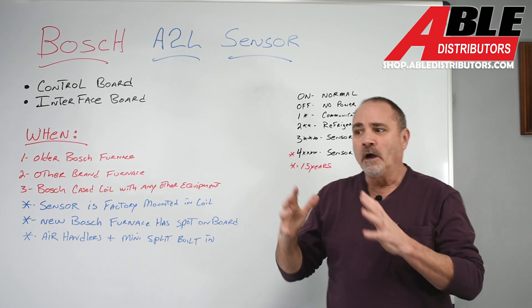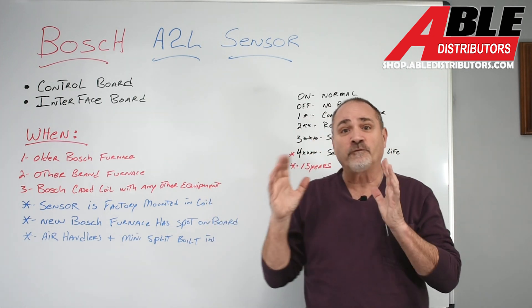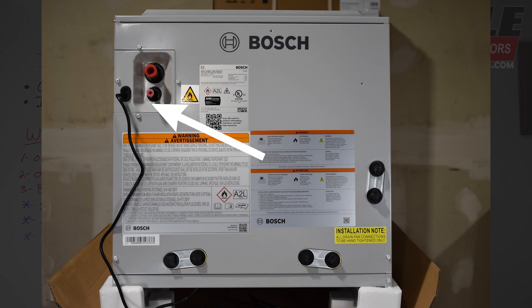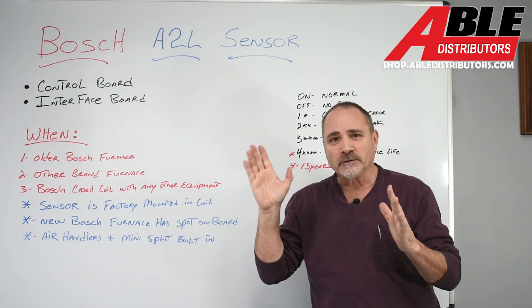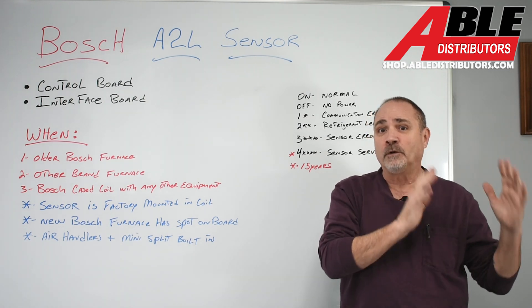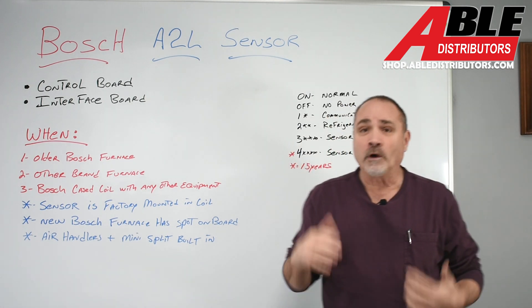When you do a Bosch cased A-coil, it's going to have the sensor for that refrigerant inside mounted from the factory with a wire coming out of the cabinet. I'm going to have a picture here for you in a minute. When you use their cased coil, that sensor has to basically communicate or talk with the piece of equipment you put it on. So let's go through when you're going to want it, what we're going to call it.